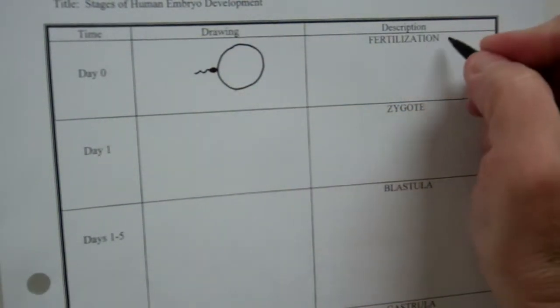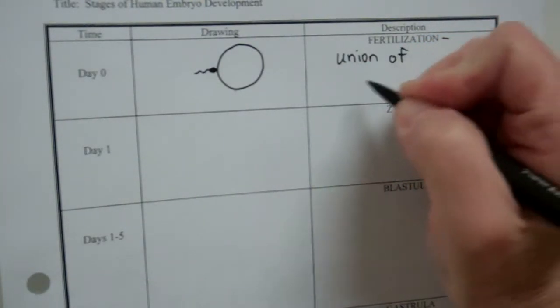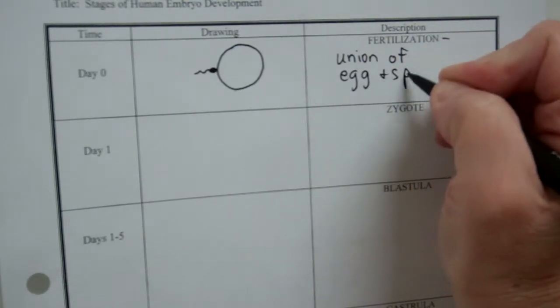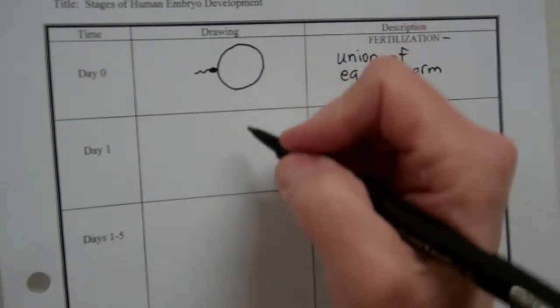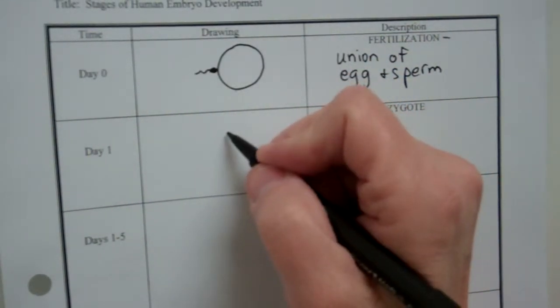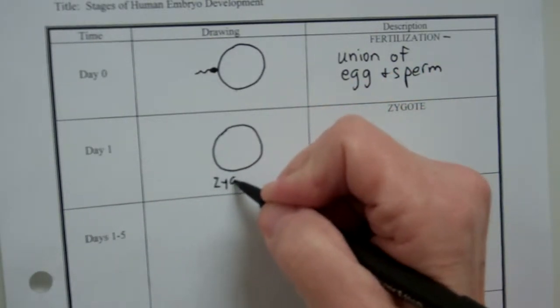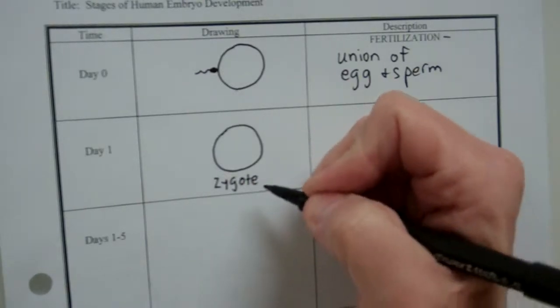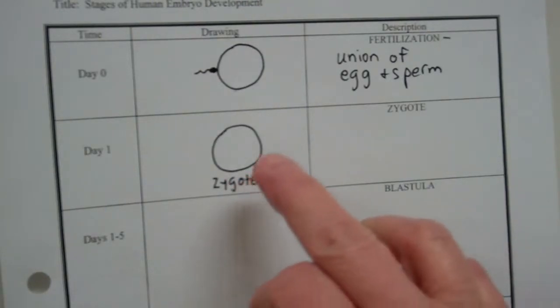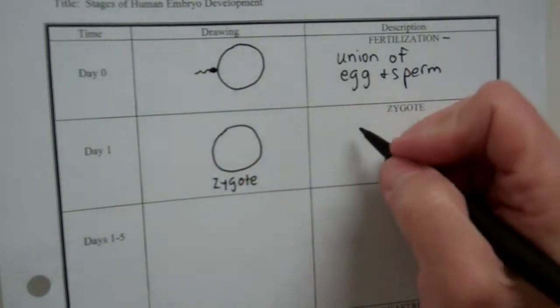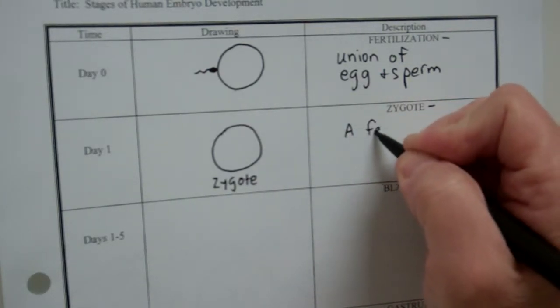So fertilization, what is it? Well, remember we said it is the union of egg and sperm. That's the definition. So then, once that happens, day one of life, we have something called a zygote. So that's our zygote. It has 23 chromosomes from mom, 23 from dad, in the case of a human. So that's what the zygote is. What's the definition of it? Definition of a zygote is a fertilized egg.